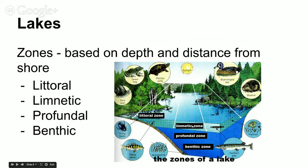Sunlight reaches all the way to the edge of the limnetic zone. When sunlight stops reaching, you get the profundal zone — that's the open water where sunlight does not reach. And then the benthic zone is anything along the bottom; benthic just means aquatic sediments, anything along the bottom.